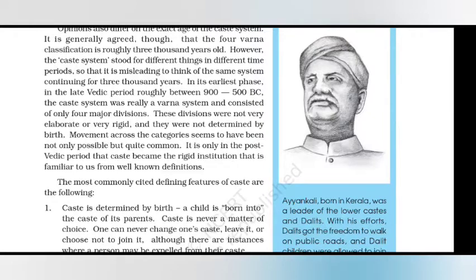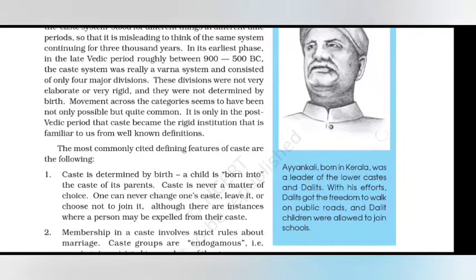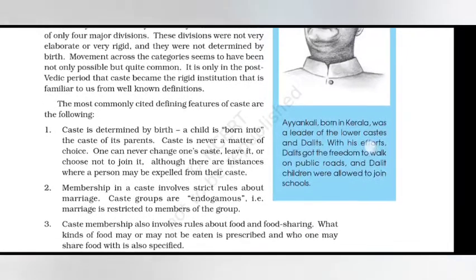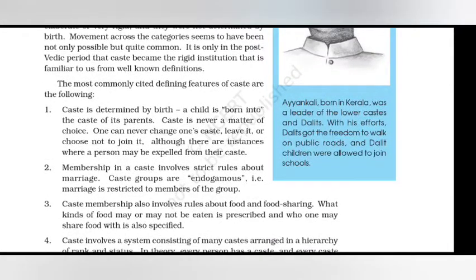The caste system stood for different things in different time periods, so it is misleading to think of the same system continuing for 3000 years. In the earliest phase — the late Vedic period, roughly between 900 to 500 BC — the caste system was really a Varna system consisting of only four major divisions. These divisions were not very elaborate or rigid, and they were not determined by birth; movement across categories seems to have been not only possible but quite common. It is only in the post-Vedic period that caste became the rigid institution familiar to us.